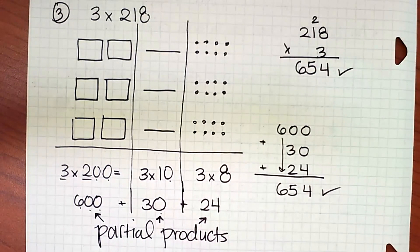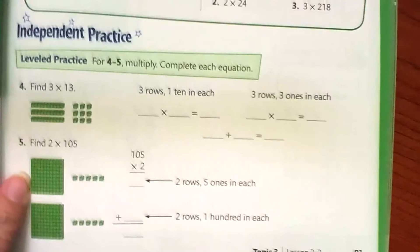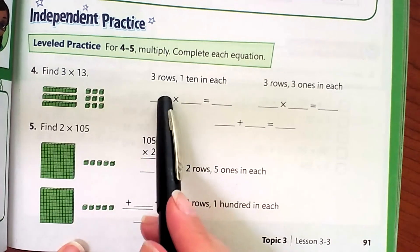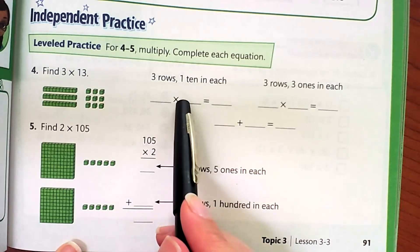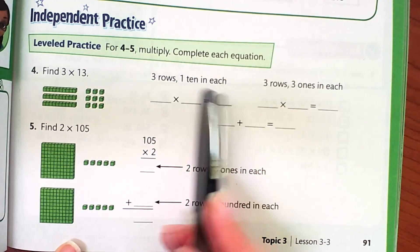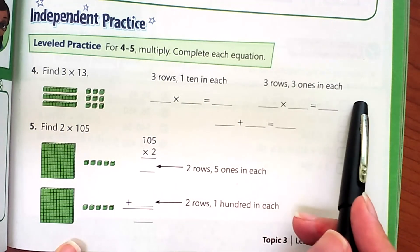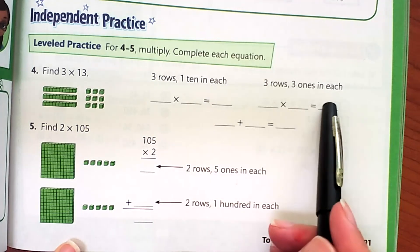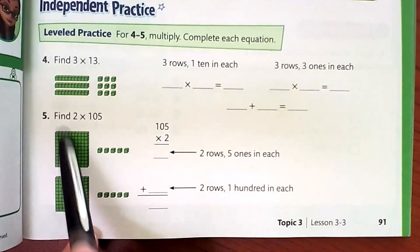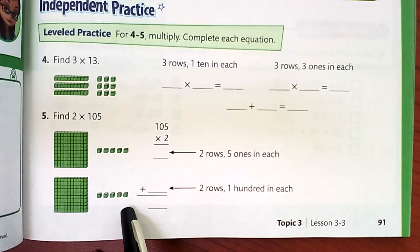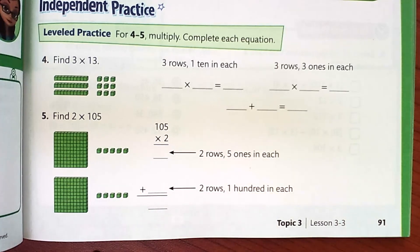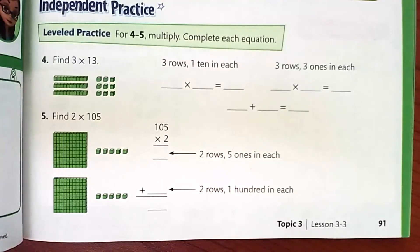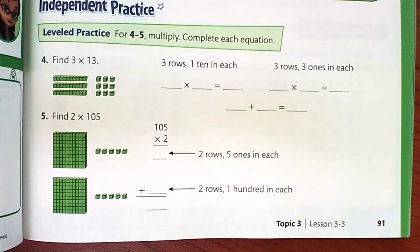Take a look at your independent practice. They're going to give you the numbers. Three times 13 - you have three rows with one 10 in each row, so 3 times 10. You find your answer. Then you have three rows with three in each row, so 3 times 3. And then you add together your partial products. Make sure you complete everything on that page and the back page all the way through number 10. If you have any questions, let me know fourth grade. Otherwise, I hope you have a wonderful day. Take care. Bye-bye.